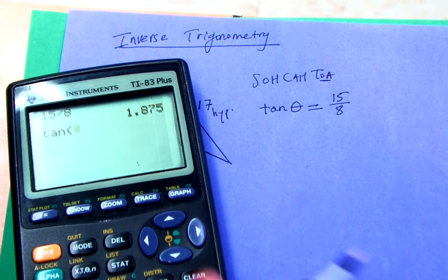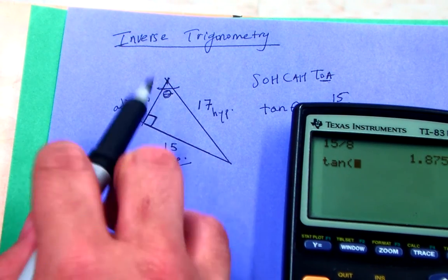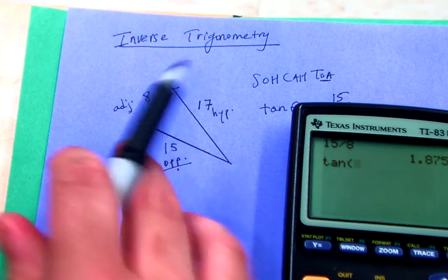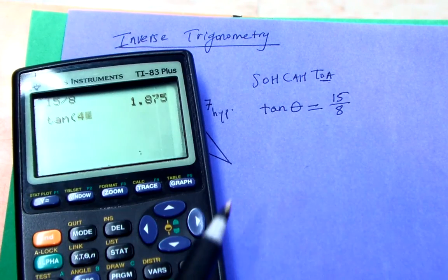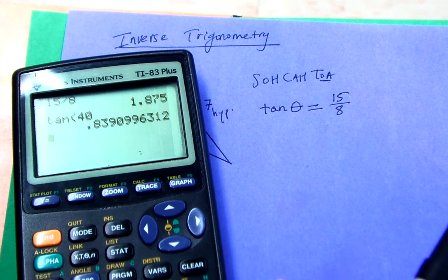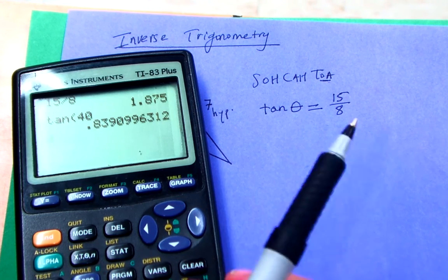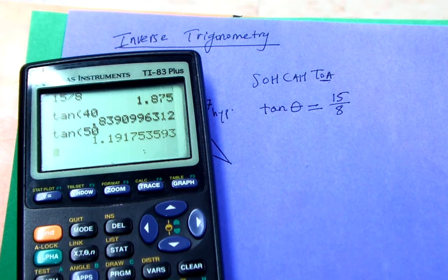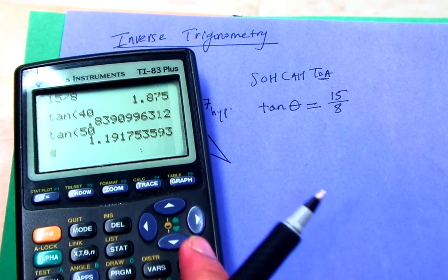So for example, I could just try some numbers here. To me, that looks like maybe a 35, 40 degree angle. So I'm going to try a tan of 40 and see how that compares to 1.875. Not very good. So I'm going to try a tan of maybe 50. Well, that's over 1 at least, so I'm getting better. You know, I could try this, but it's not a very exact approach.